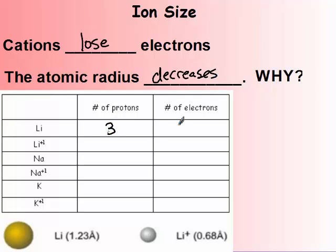Lithium has three protons and three electrons. Lithium ion, three protons, two electrons. Sodium, eleven protons, eleven electrons. Sodium ion, eleven and ten. And potassium has nineteen and nineteen and nineteen and eighteen.